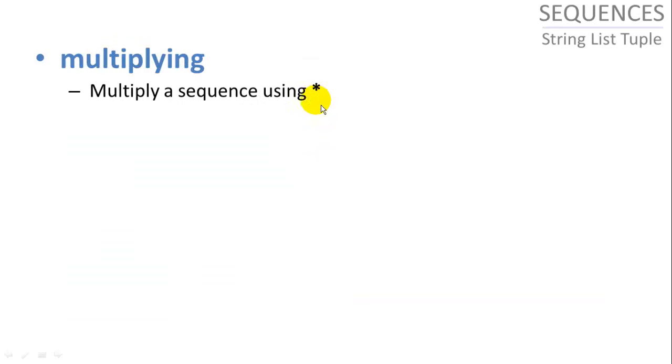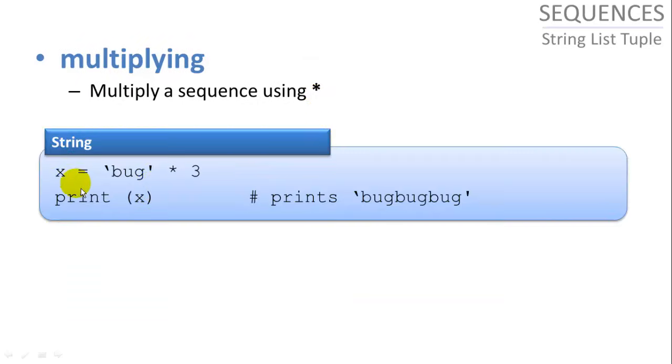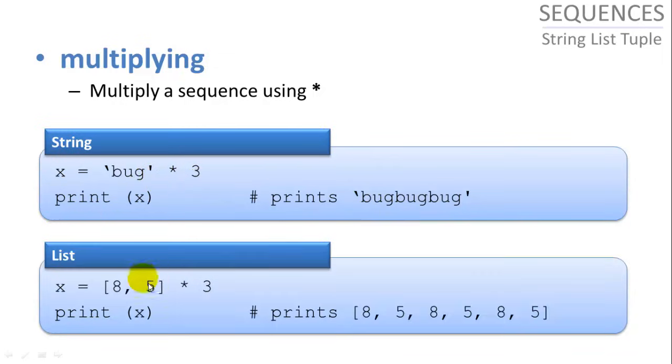Multiplying, we can use the star sign to multiply sequences, again, of the same type. So if we have bug, it will multiply the word bug three times and give us bug, bug, bug. Or if we have a list with an eight and a five in it, we want to multiply that by three, it will give us eight five three times in our list.